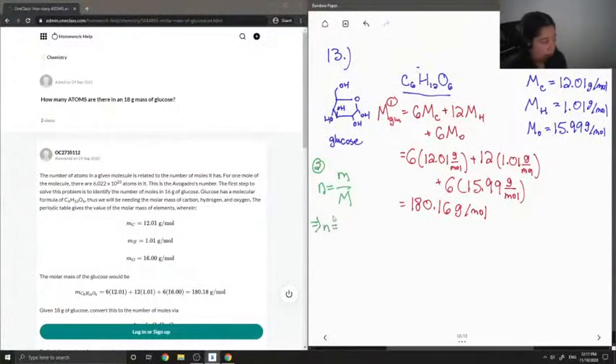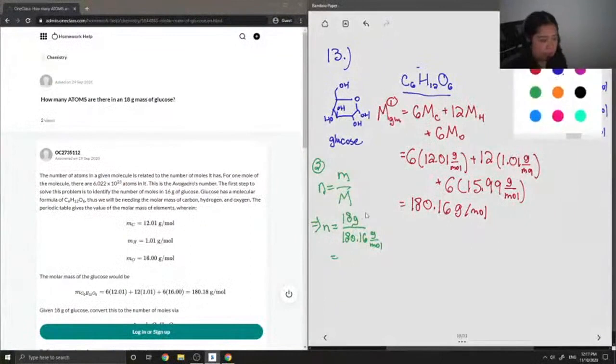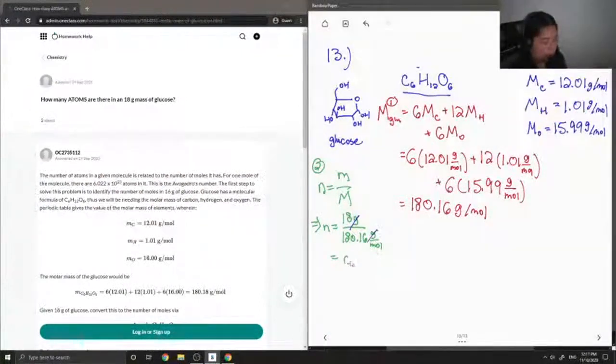So the mass in the question was 18 grams, and the molar mass of glucose is what we calculated in the previous step, 180.16 grams per mole. And when we divide it all out, you'll notice the grams will cancel out and we're left with a value in moles, which is 0.10 moles.